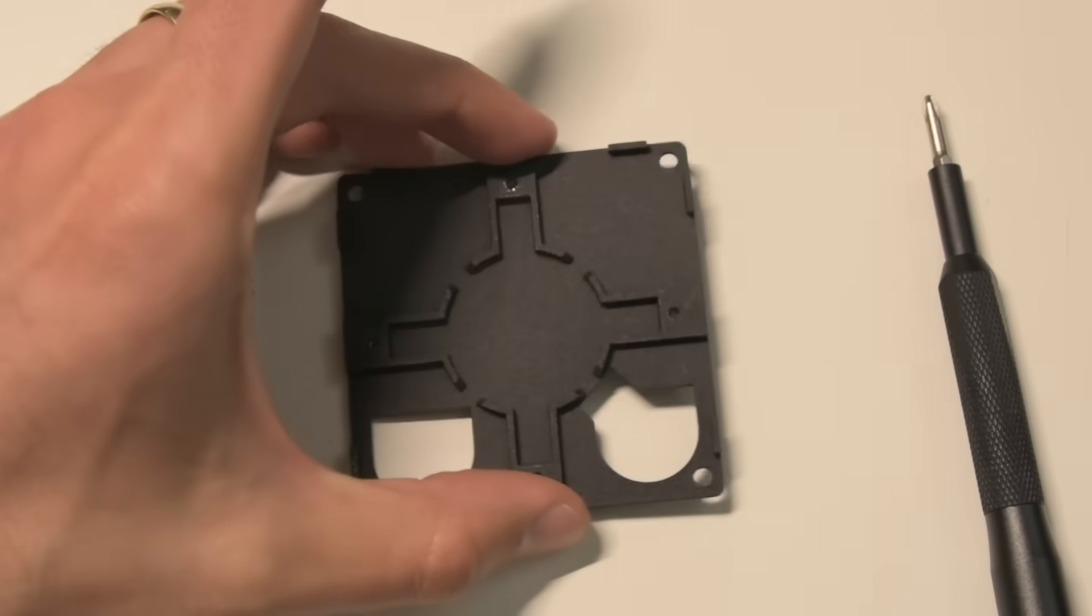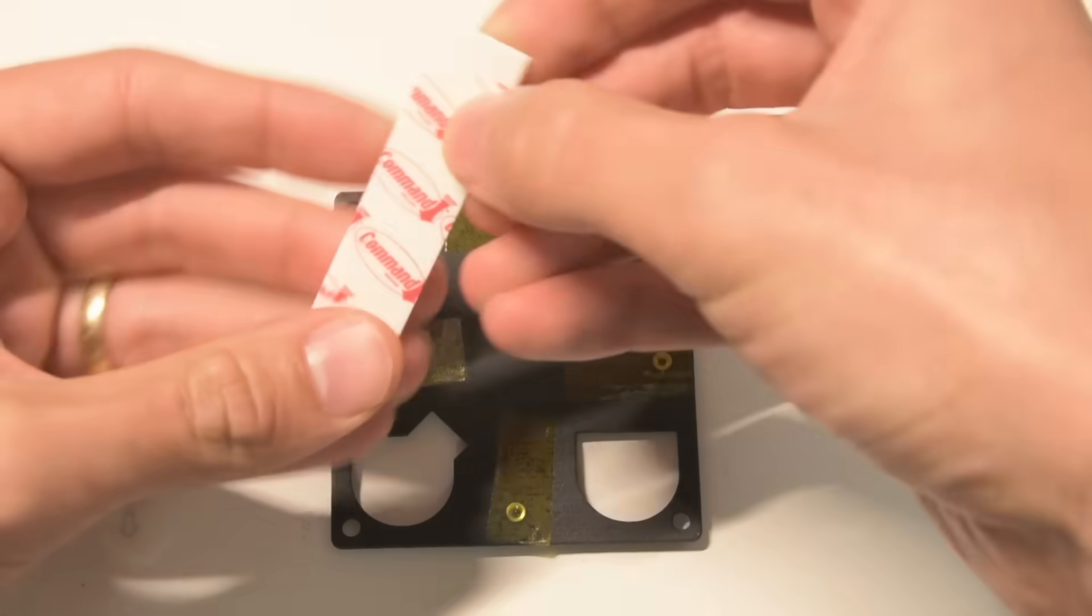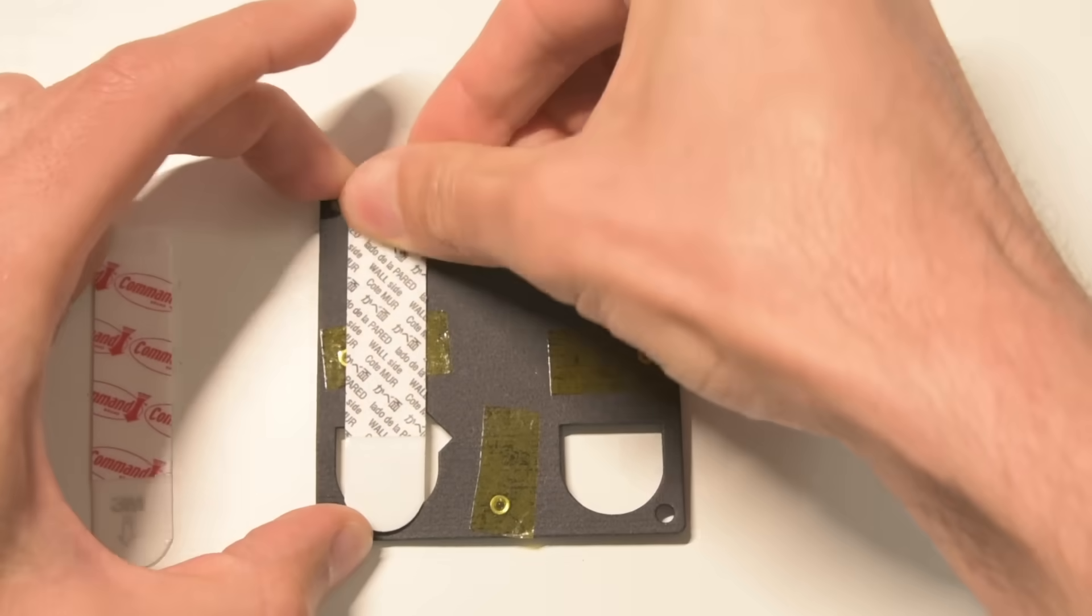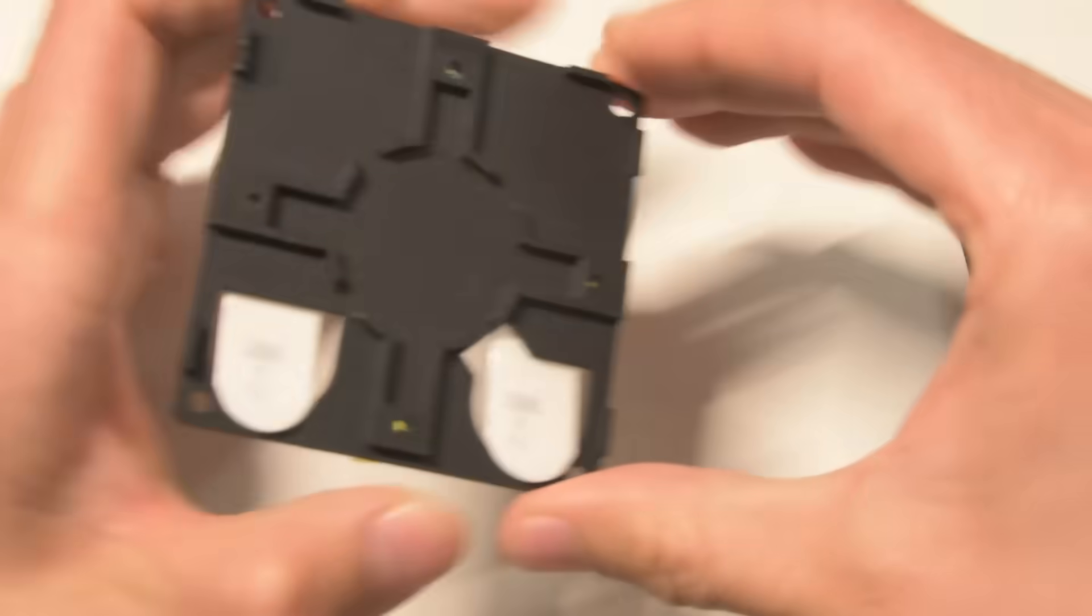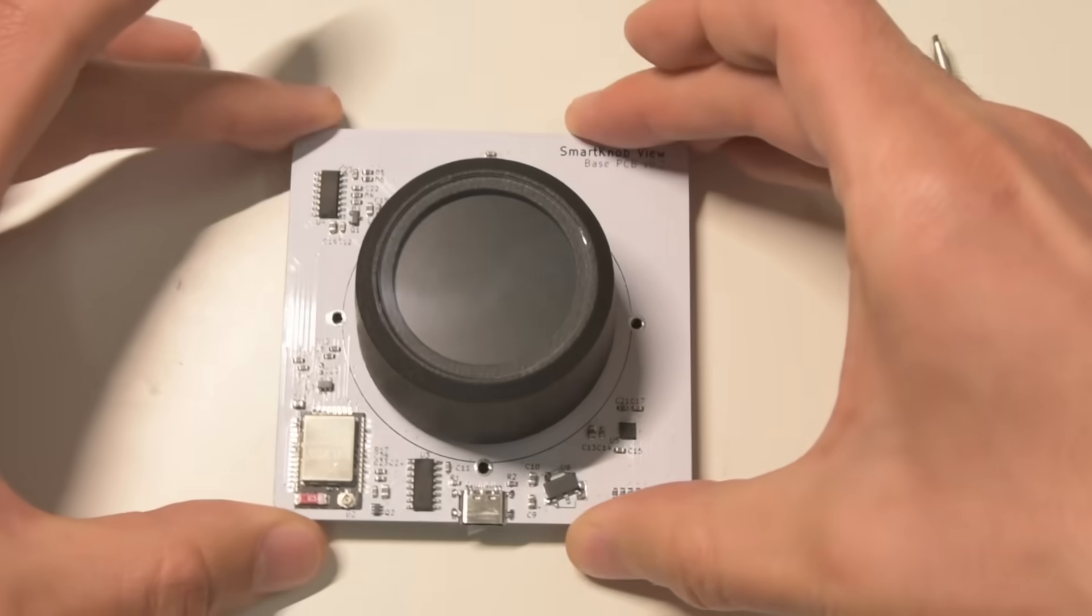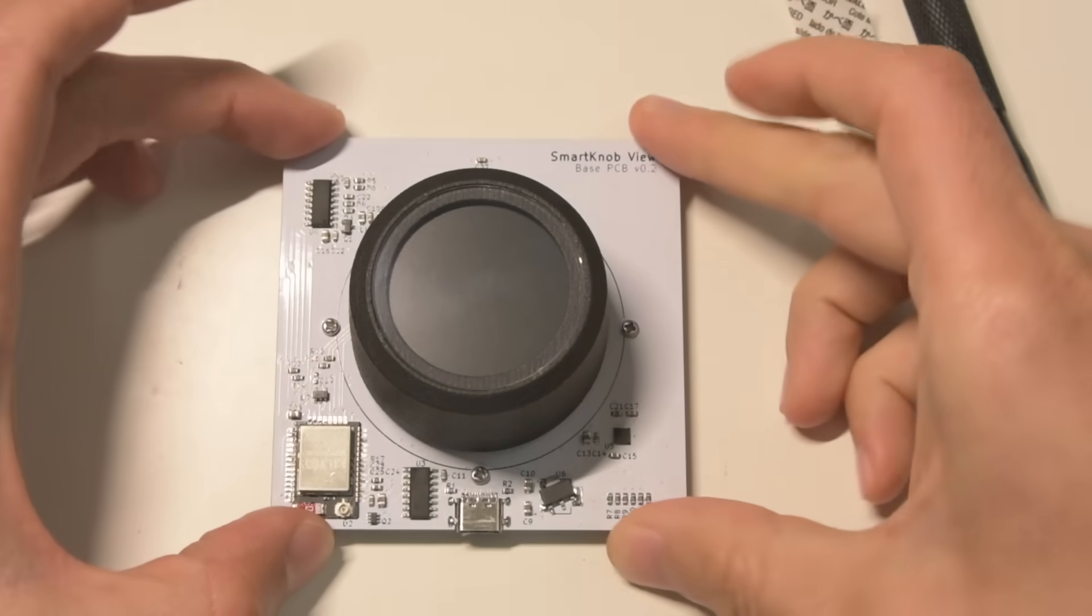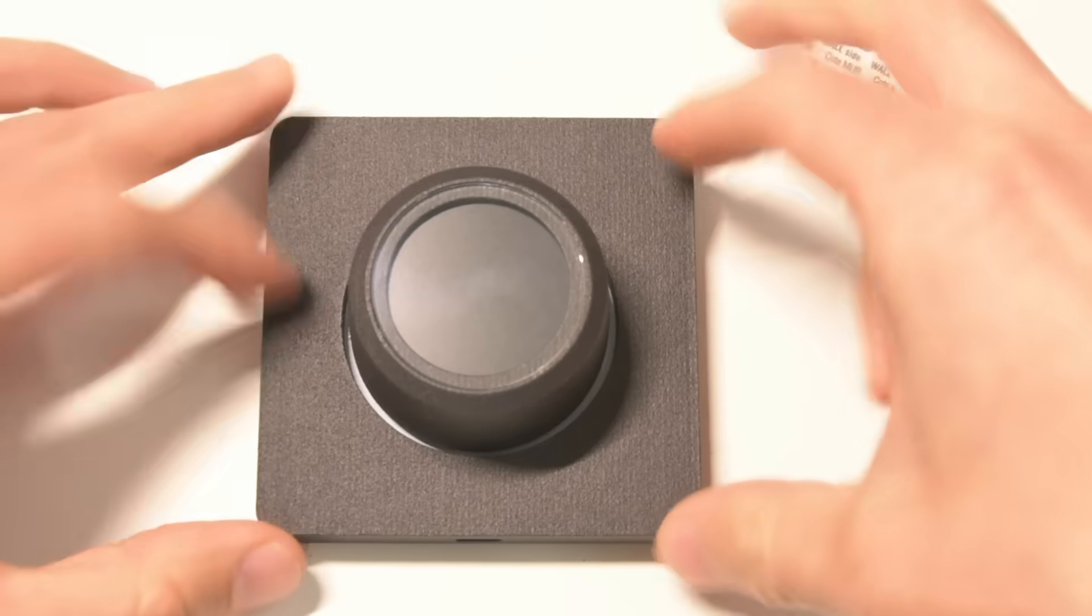To mount the smart knob view to a wall or other surface, you can either use the 4 screw holes in the corners of the backplate, or it's designed to work really well with removable adhesive strips, with special cutouts that make them super easy to remove later. Just apply the adhesive strips, stick it to the wall, and then screw down the main PCB. The cover just snaps into place, and you can power it up with a USB-C plug.